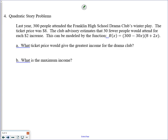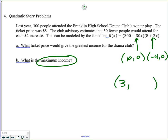Last year, 300 people attended the Franklin Drama Club Winter Play. The ticket price was $8. The club advisor estimates that 30 fewer people would attend if a $2 increase. This can be modeled by the function. Now, they want to find the actual vertex to find the maximum income. So, now, what are the intercepts? Well, this is negative 4, 0. It's the value that makes that parentheses 0. And this one would be at 10, 0. So, now, the vertex is the halfway point in between those. So, I get 3. And then I plug 3 in for all the x's. So, 300 minus 3 times 30 times 8 plus I get 2, 9, 4, 0 using my calculator quickly there. So, the maximum income is 2,940.